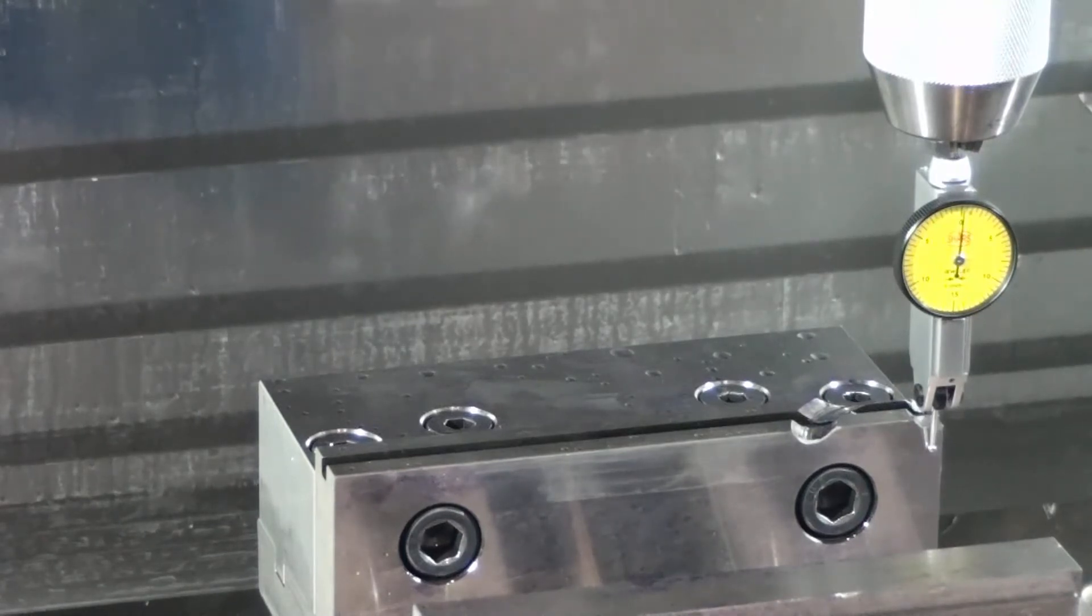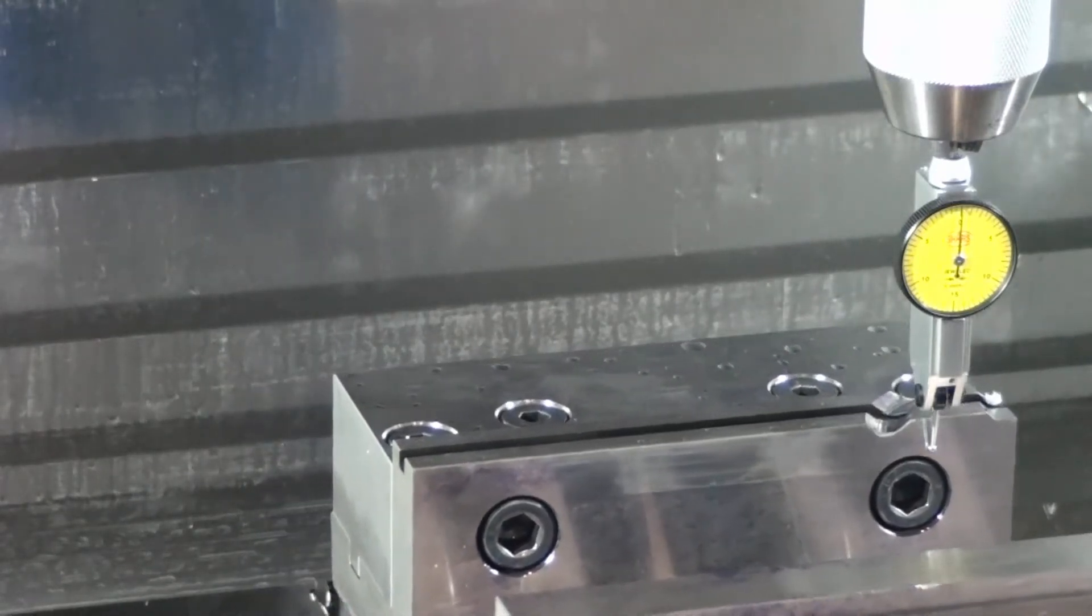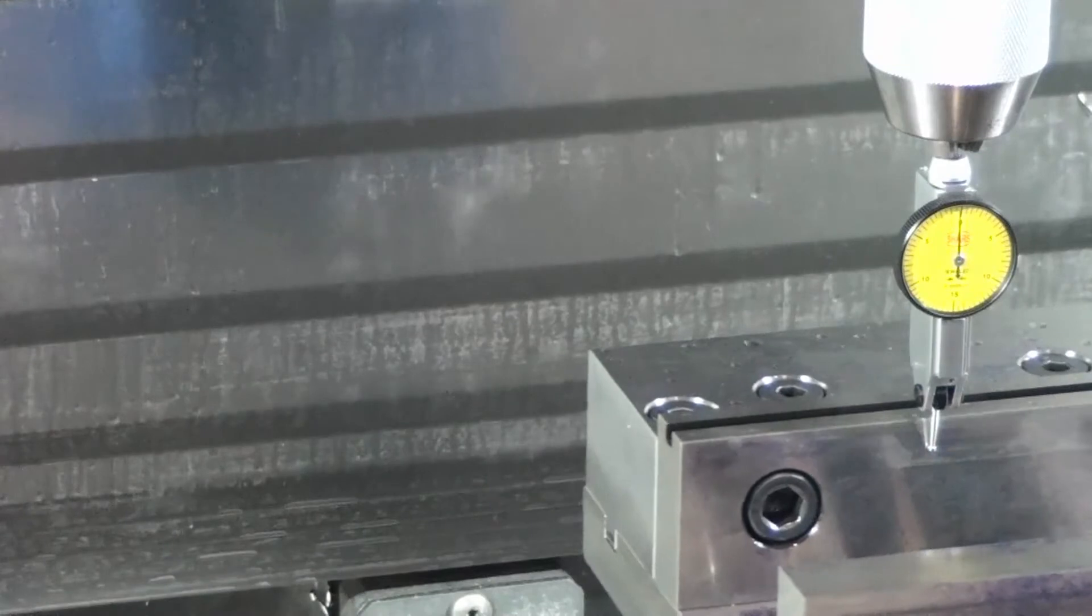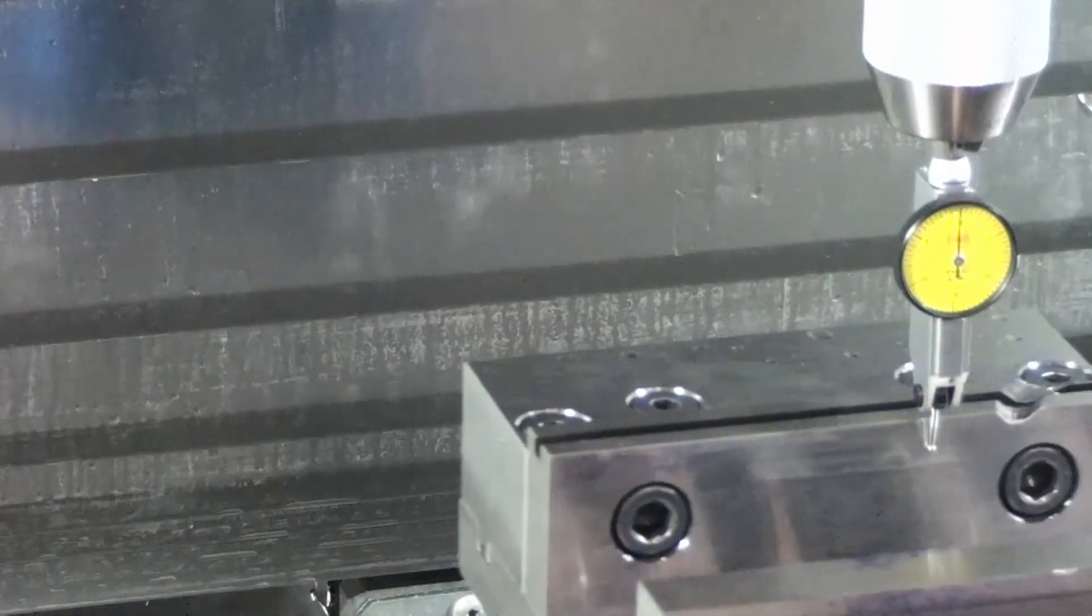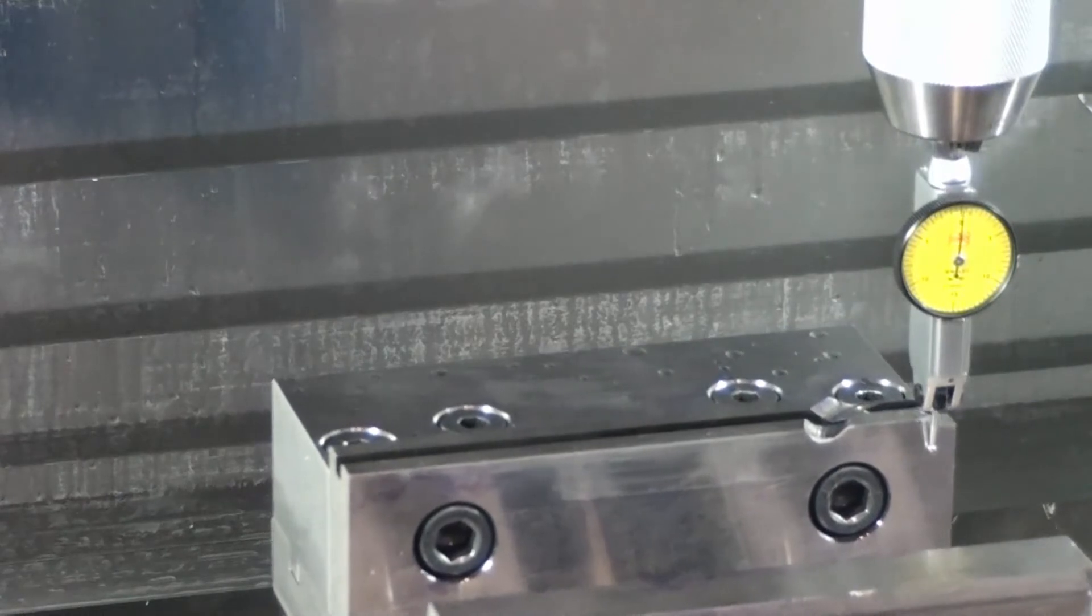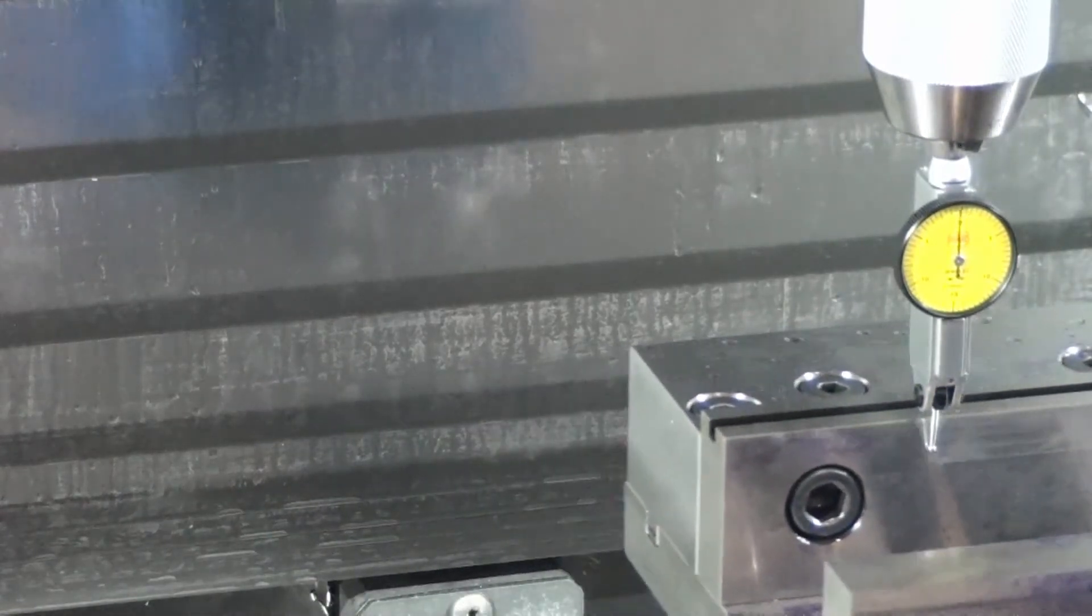You don't need to move the indicator a lot. About five thousandths is about all you need. Now I'm going to hit X and ten thousandths and I'm going to move the indicator towards the left side of the vise jaw. What I'm checking is the difference between the right hand side of the vise and the left hand side of the vise.